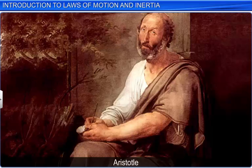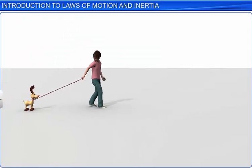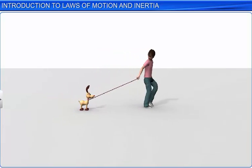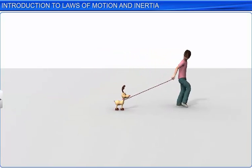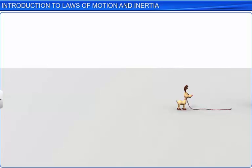Aristotle put forward his view that an external force is required to keep a body in motion. This seems to be right when you apply it to all the day-to-day activities taking place around us. For example, to pull a toy, a boy applies a pulling force on the string attached to the toy. As soon as he drops the string, the toy stops. It seems as if what Aristotle said holds well in this example.